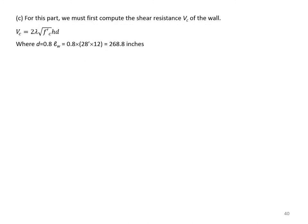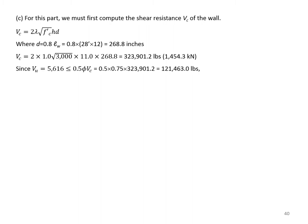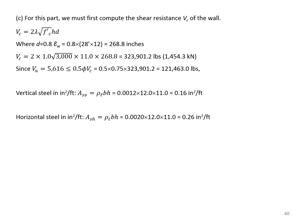For part C, computing shear resistance: Vc = 2λ√f'c · h · d, where d = 0.8 × LW. Plugging the numbers gives Vc = 323,901.2 pounds. Our VU = 5,616 lb, which is less than 0.5φVc, so minimum steel ratios apply: ρL = 0.0012, giving vertical steel ASV = ρL·B·h = 0.16 sq in/ft; and ρT = 0.002, giving horizontal steel ASH = 0.26 sq in/ft.